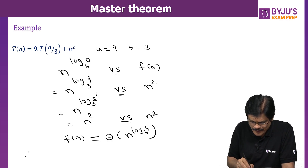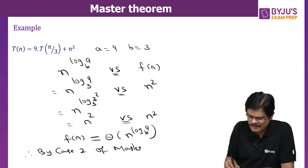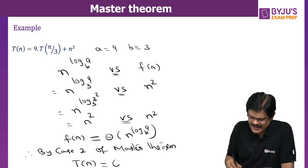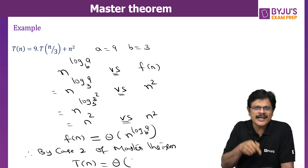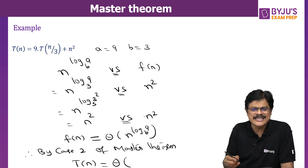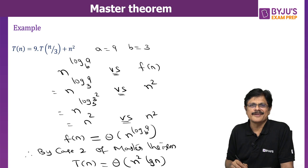Since F(n) and n^(log_B A) are having the same order of growth, by Case 2 of Master Theorem, we conclude that T(n) is Θ(F(n) · log N), or equivalently Θ(n^(log_B A) · log N), which is Θ(N² log N).